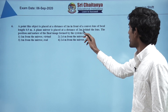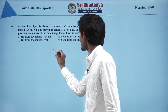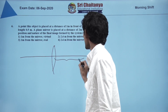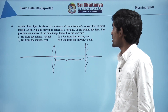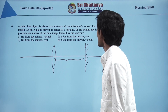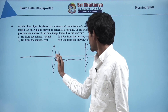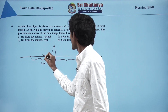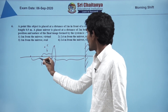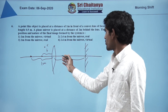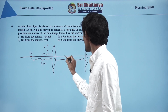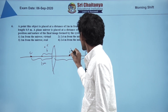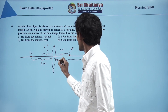A point object is placed 1 meter in front of a convex lens of focal length 0.5 m. A plane mirror is placed 2 meters behind the lens. The object is at the center of curvature since u = 1 m = 2f. So the first image formed by the lens is also at 1 meter on the other side, which is 1 meter from the mirror.